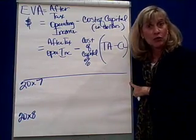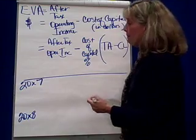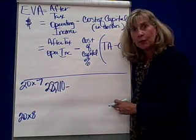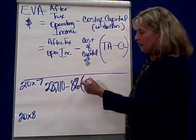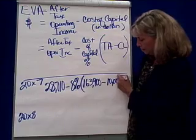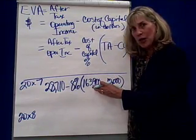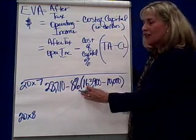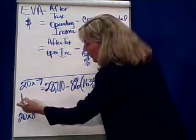Let's see how that works using problem P4. In 2007, the after-tax operating income is $28,710. The cost of capital is 8%. We take 8% times the assets at end of year, $163,900, minus current liabilities at end of year, $10,000. The difference between assets and current liabilities gives us the free resources this manager has to make a difference. The EVA comes out to be $16,398.